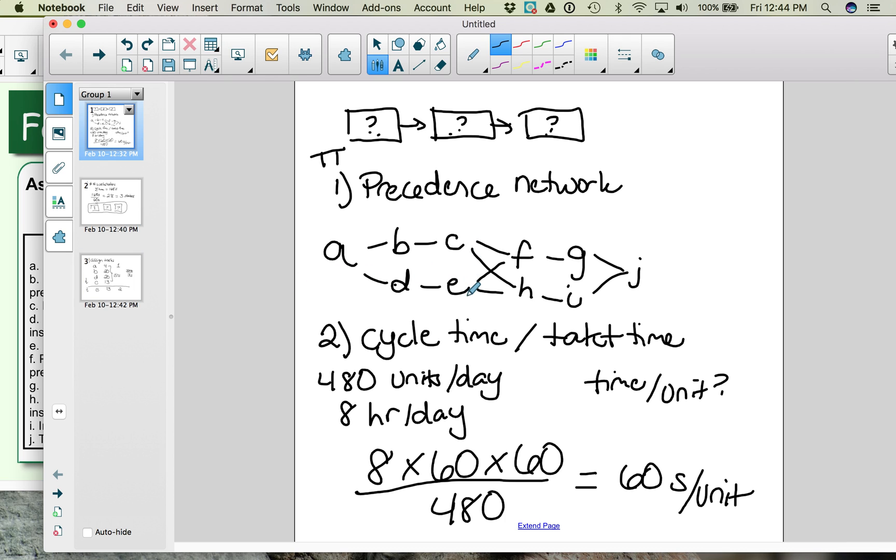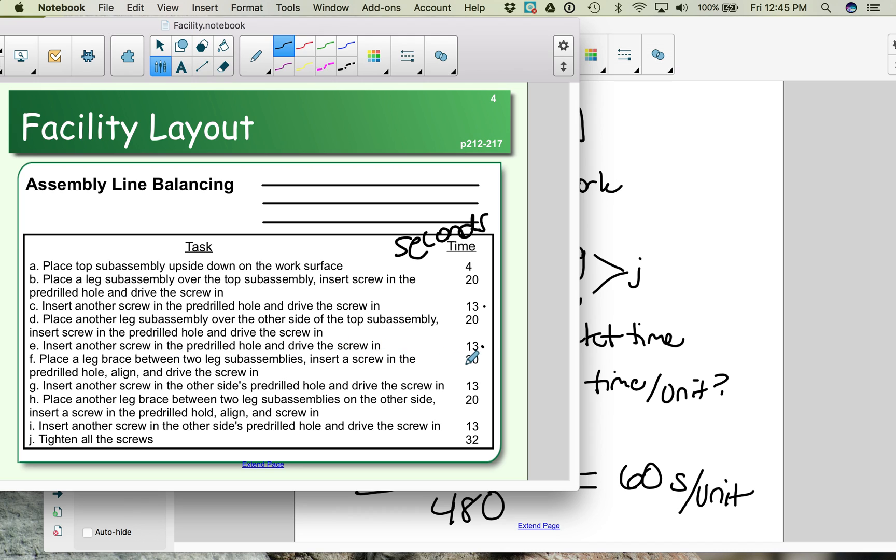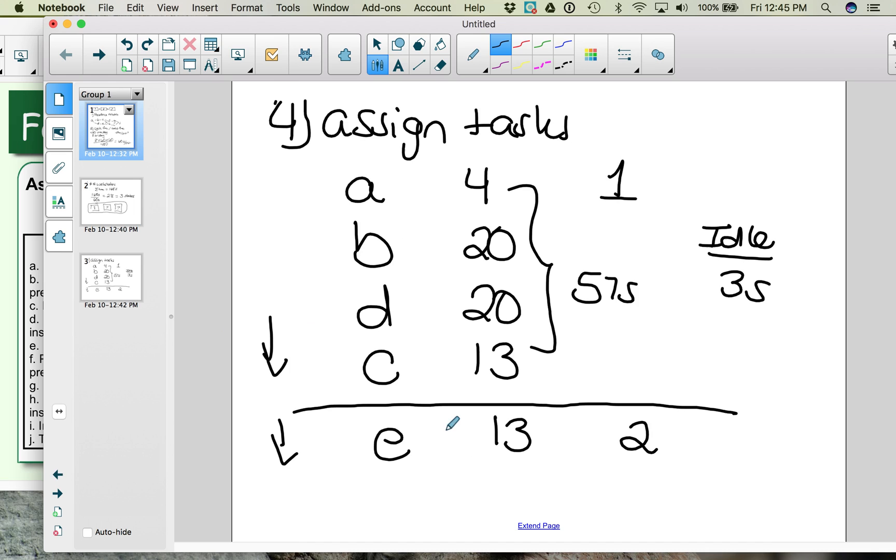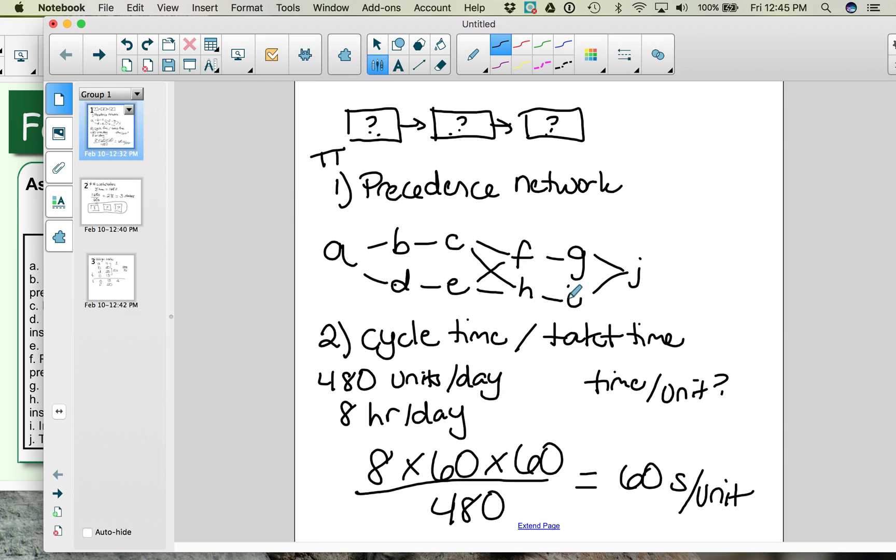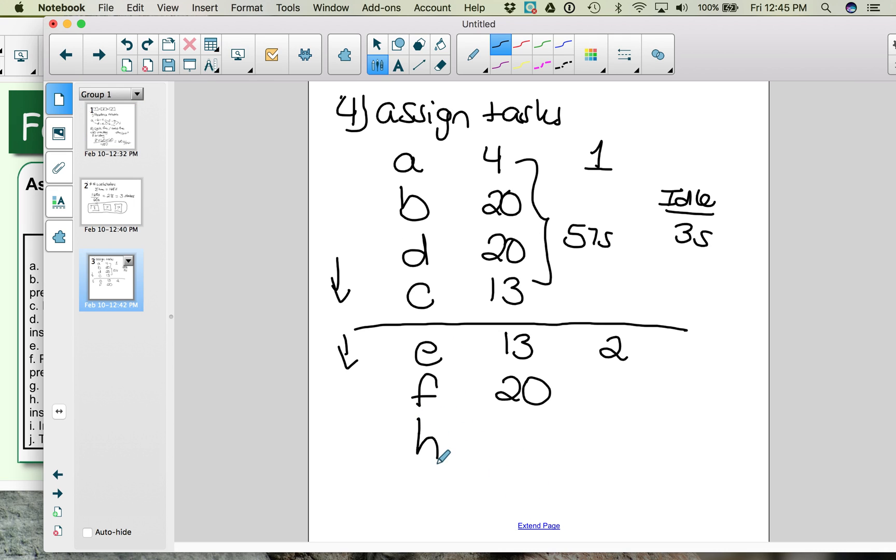We go back to our precedence network. Now we need to add F or H because they both have the same number of followers. It doesn't matter which one you add. F takes 20 seconds, and H takes 20 seconds. So let's start with F. And that is 33 seconds out of our 60, so we can also add H. So let's add H here. And H was also 20 seconds, so this is 53 out of the 60 seconds.